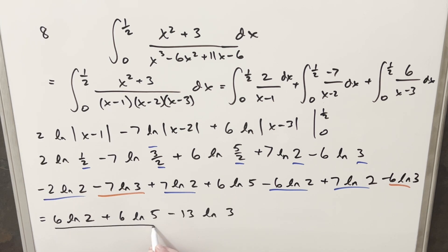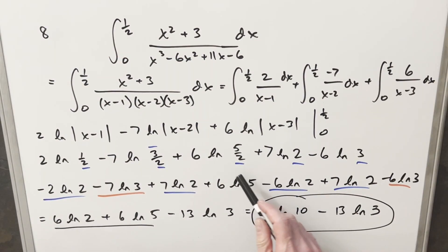But now in this one here, I can actually factor a 6 out of this and write this as 6[ln(2) + ln(5)]. But then by the property of logs, I can actually multiply what's inside, so I can write this as 6 ln(10) - 13 ln(3). I think that's about as simple as I'm going to get it, so we'll just circle it and call it good. So good problem, but like you can see, it got a little tedious here at the end. So we'll stop it there.